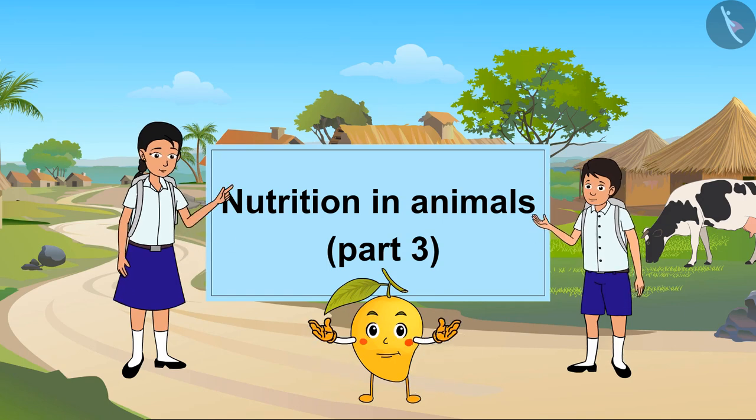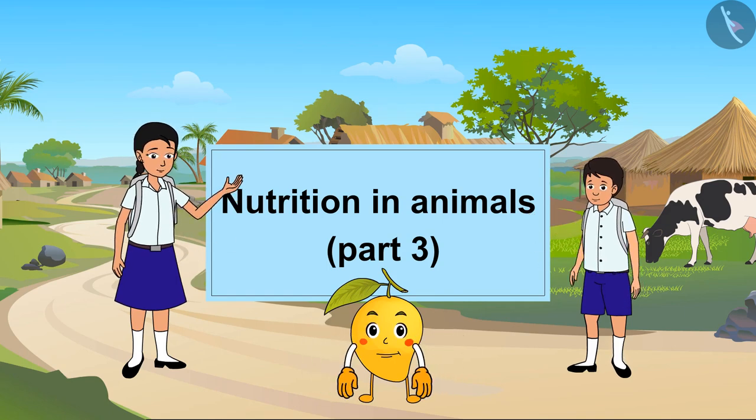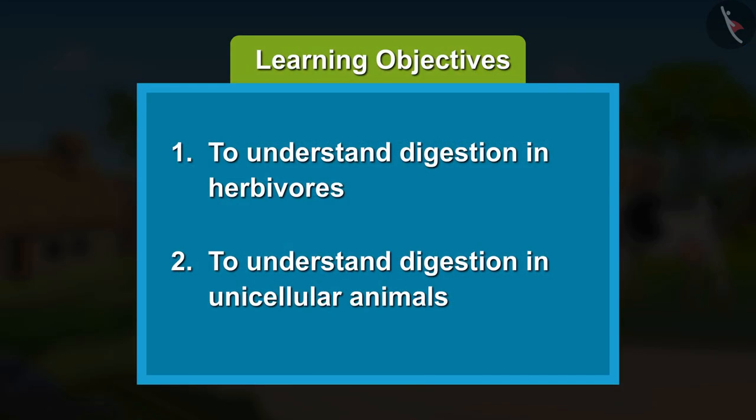Nutrition in Animals Part 3. Learning Objectives: 1. To understand digestion in herbivores. 2. To understand digestion in unicellular animals.